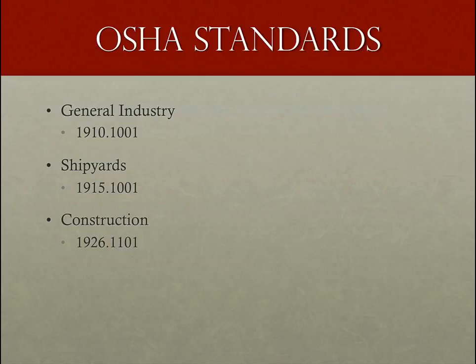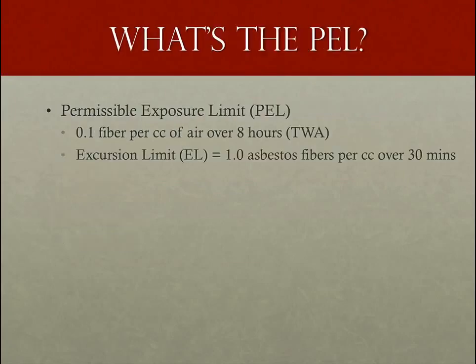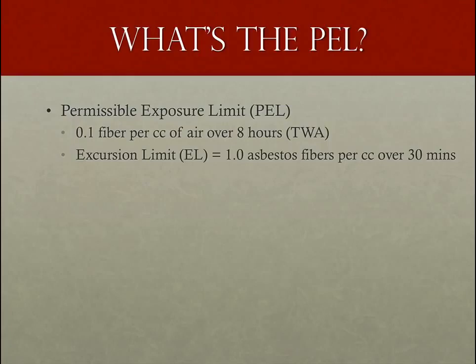For construction, 29 CFR 1926.1101 covers construction, alteration, repair, maintenance, renovation, and demolition of structures containing asbestos. The permissible exposure limit, or PEL, for asbestos is 0.1 fiber per cubic centimeter of air as an 8-hour time-weighted average (TWA), with an excursion limit of 1.0 asbestos fibers per cubic centimeter over a 30-minute period. The employer must ensure that no one is exposed above these limits.